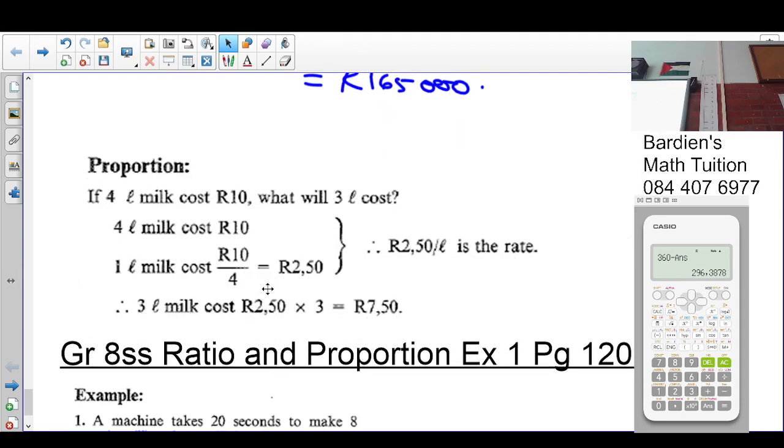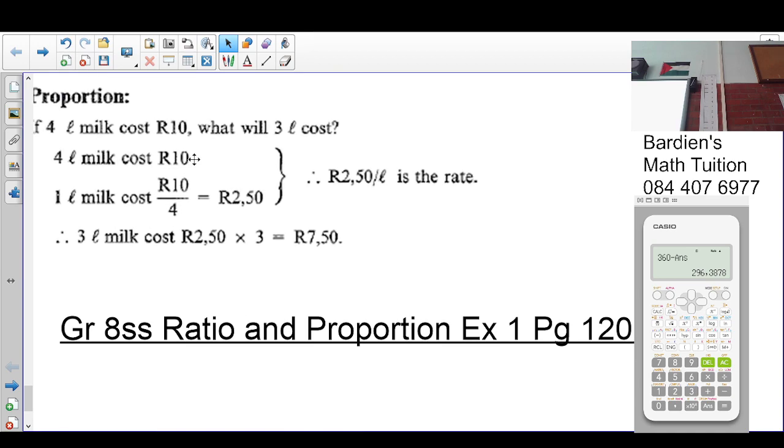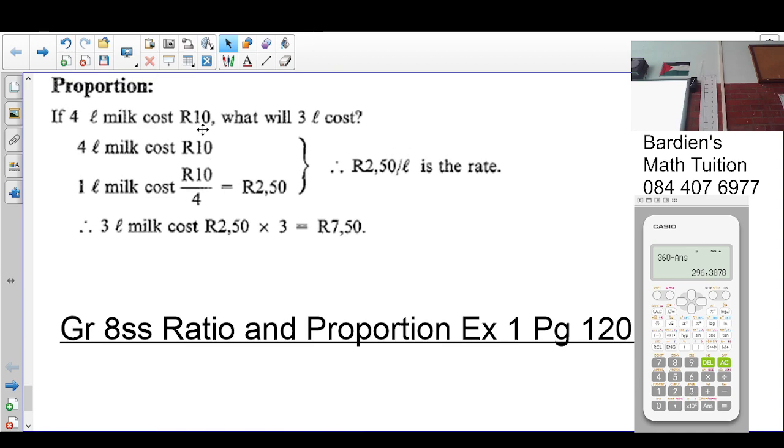Proportion. We have made this note already, not so. So here we are told that proportion: if 4 liters of milk cost 10 rand, what will 3 liters cost? 4 liters cost 10 rand, then you go 1 liter. So what I do is I divide both by 4. I get 10 over 4, which is 2 rand 50 per liter. This is the rate.